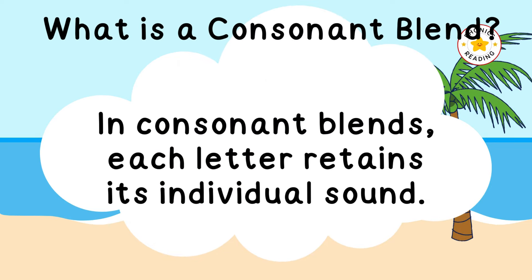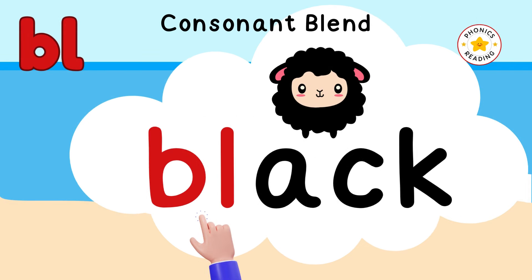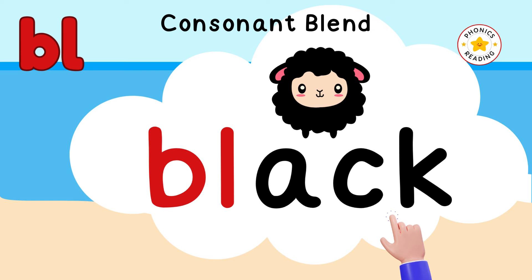Consonant blends are a set of two or three consonant letters that, when pronounced, each letter retains its sound — like BL, A, K — black.